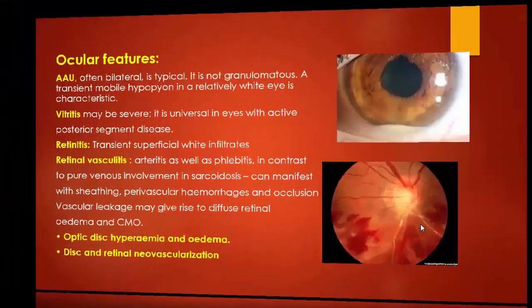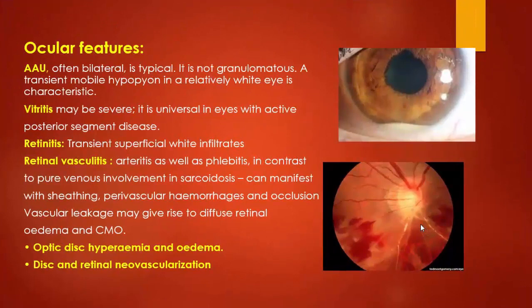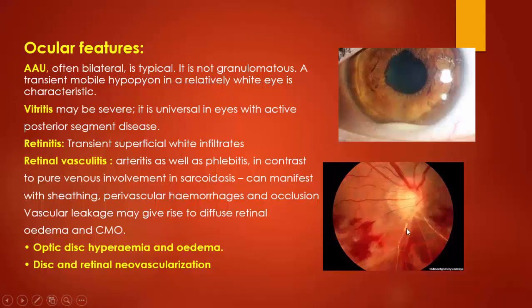Ocular features in Behçet's disease include acute anterior uveitis which is non-granulomatous, characterized by mobile hypopyon which is white in color. Vitritis may be severe with posterior segment involvement. Retinitis with characteristic transient superficial white infiltrates. Retinal vasculitis including arteritis as well as phlebitis, in contrast to venous-only involvement which occurs in sarcoidosis. In Behçet's disease, arteritis and phlebitis lead to devastating vascular hemorrhage and occlusion with resultant cystoid macular edema and diffuse retinal edema. Optic disc can be affected with hyperemia and edema, and disc and retinal neovascularization in late stages.